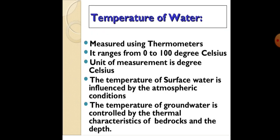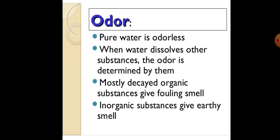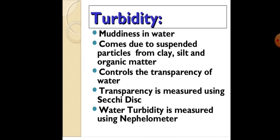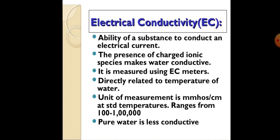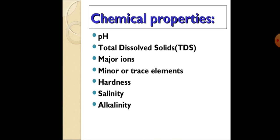So the physical properties are: temperature of water, color of water, odor, turbidity, and EC that is electrical conductivity. Today we will learn about chemical properties of water. There are various chemical properties: firstly pH, total dissolved solids, then major ions, minor or trace elements, then hardness, salinity, and alkalinity — we will discuss one by one.